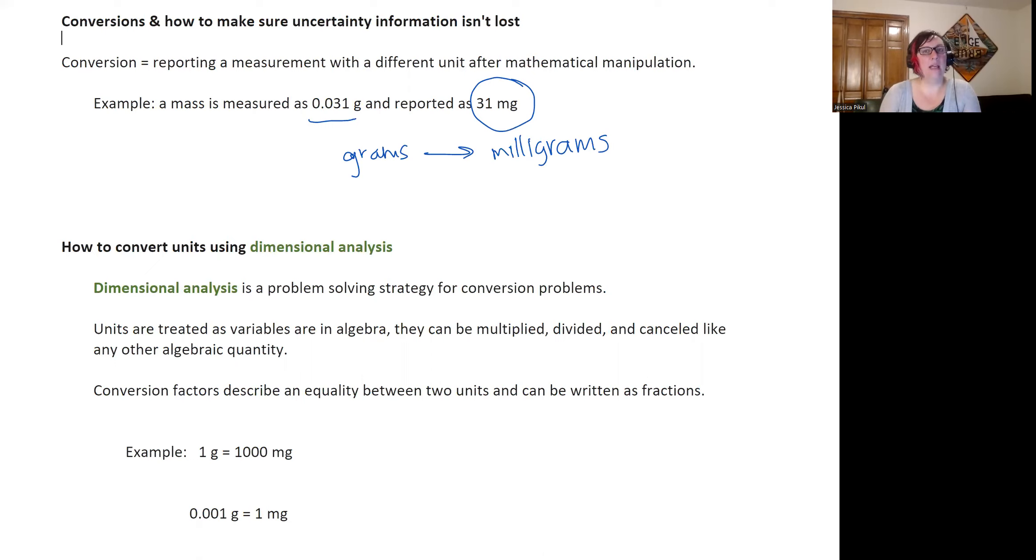So the way that we usually set up conversion problems is with a problem-solving strategy that we call dimensional analysis. You'll also see it called factor label method as well. And using dimensional analysis, we can set up a conversion problem to make sure that we are correctly multiplying or dividing by the conversion factor.